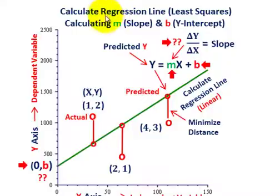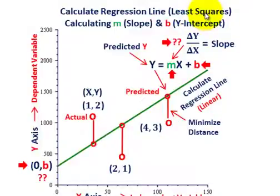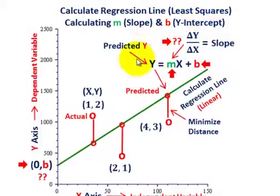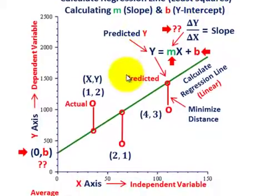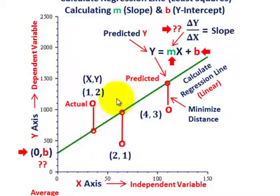What we're going to be going over here is an example on how we'd calculate a regression line, and really this is using the least squares method. When we're talking about a regression line, this is where we're going to have some data on our graph and we're going to try to fit a line to that data.